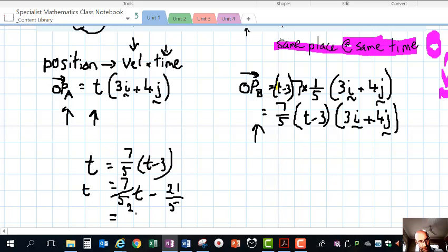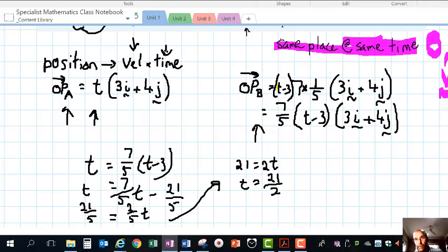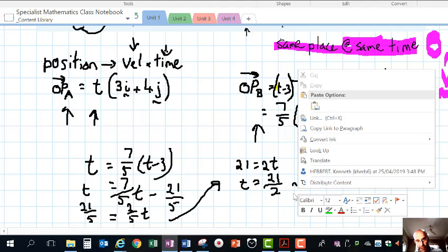If we subtract 7/5·t, we get 2/5·t on one side and add 21/5 to the other. So 21/5 = 2/5·t. Multiply both sides by 5: 21 = 2t, so t = 21/2, which is 10.5 seconds.